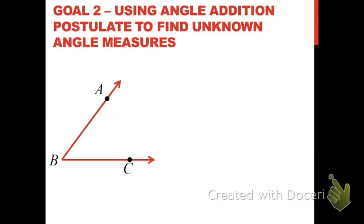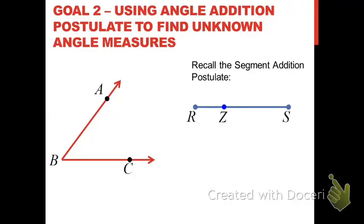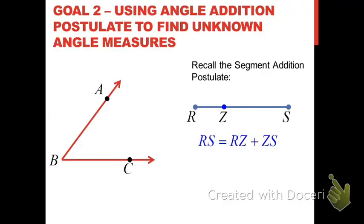Let's begin the lesson by describing the angle addition postulate. I'll do that by reminding you of something very similar — the segment addition postulate that you learned a couple of sessions back. The segment addition postulate was this: you have a line segment RS, and you place a point Z somewhere between R and S. That creates two smaller segments, and the sum of their lengths equals the length of the original segment RS. In other words, the distance from R to S equals the distance from R to Z plus the distance from Z to S.